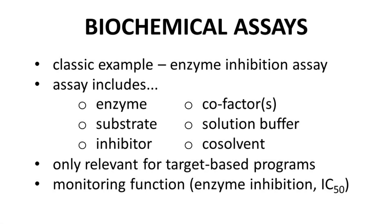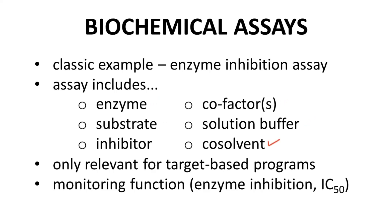Biochemical assays are often relatively simple to perform compared to other in vitro assay types. The classic example is an enzyme inhibition assay. The assay can be performed in a small volume and would include the enzyme, substrate for the reaction, the inhibitor — which is your potential drug — cofactors required for the reaction, a solution buffer, and perhaps a co-solvent to maintain solubility of the inhibitor.